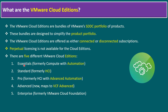The five VMware Cloud Editions are: Essential (formerly Compute with Automation), Standard (formerly HCI), Pro (formerly HCI with Advanced Automation), VMware Cloud Advanced (maps to VCF Advanced licensing), and VMware Cloud Enterprise. There are two subscription methods: connected and disconnected.